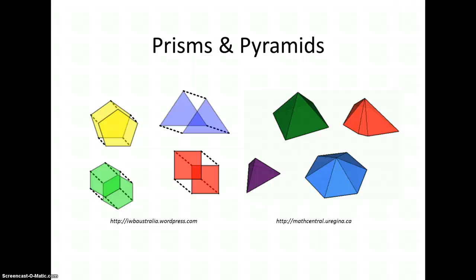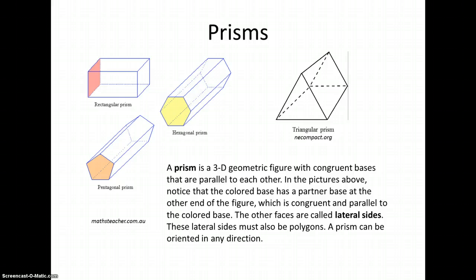This lesson is on prisms and pyramids. A prism is a 3D geometric figure that has two bases that are congruent and parallel to each other. This means they are the same size and shape and parallel.